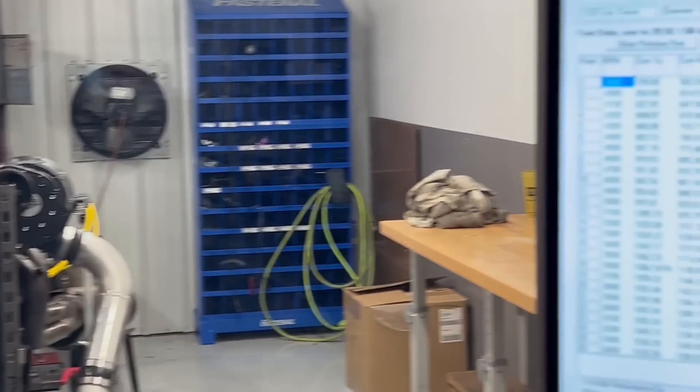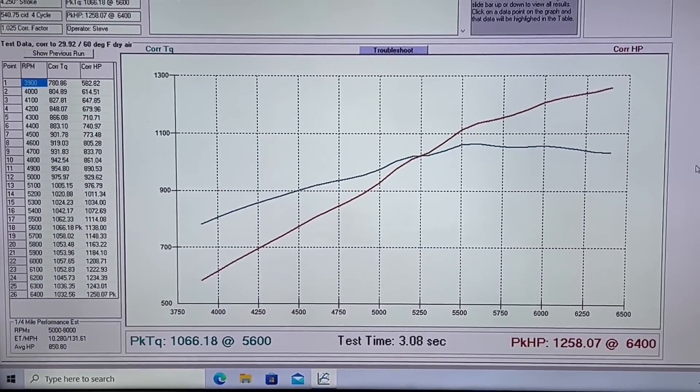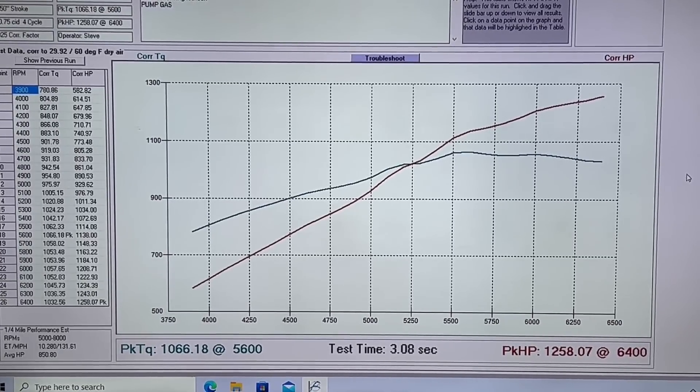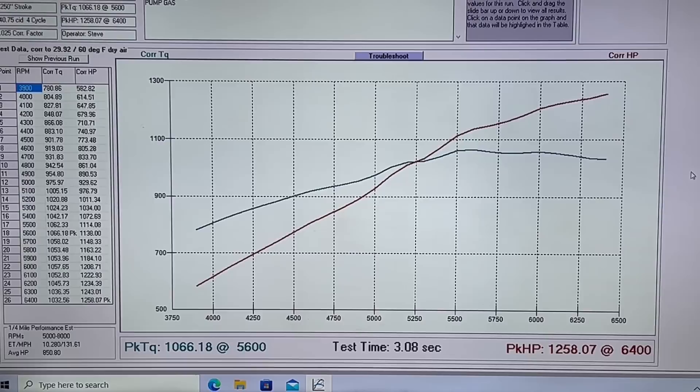All right, let's take a look at the numbers here on our pump gas tune. Just a good old 93 octane made 1,258 at 6,400 and 1,066 at 5,600. Now this tune is a little bit different, a little bit more conservative down low trying to keep it from knocking, but still made really solid horsepower, really solid torque.